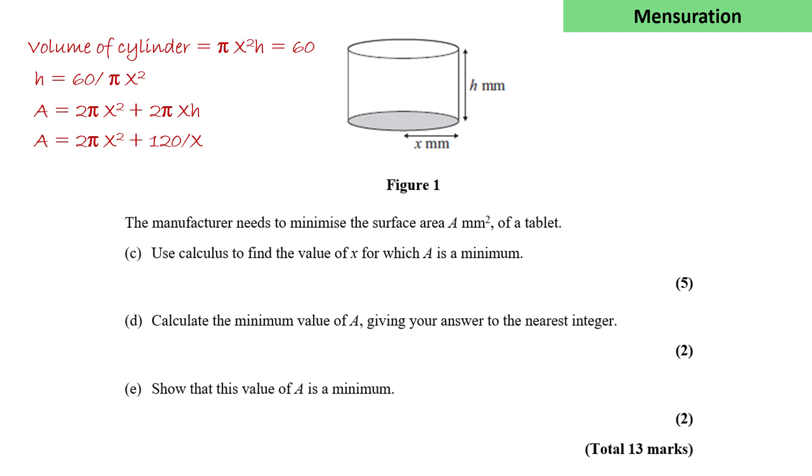We're then asked to use calculus to find the minimum value of this area. So we differentiate A with respect to x. We know the minimum dA/dx equals 0. We can solve this equation for x, and we get x is the cube root of 4π/120.